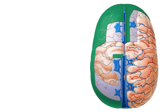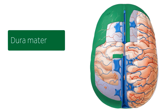The outermost layer is known as the dura mater, highlighted here in green. This is the outermost layer, which is the first structure we will look at. Its name means strong or tough mother, due to the fact that it is actually the strongest of the membranes that cover your brain and spinal cord.